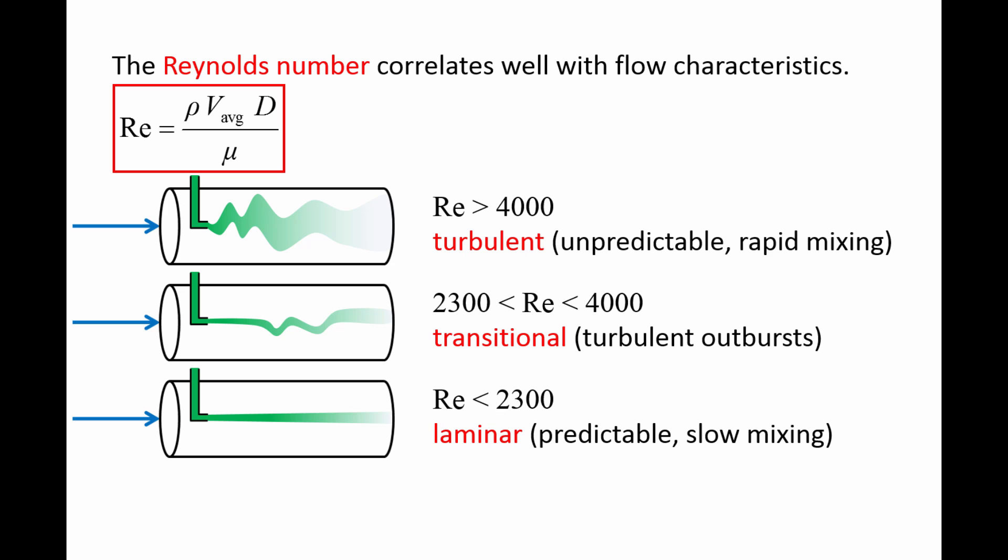They have characteristics of both laminar and turbulent flows. It should be noted that 2300 and 4000 are only approximate cutoff values for laminar, transitional, and turbulent behavior in pipes.